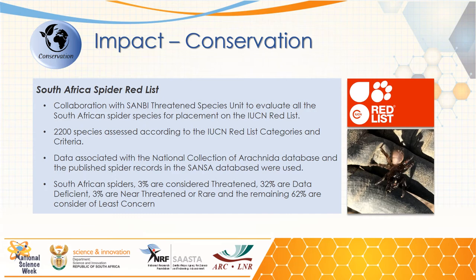The South African Red List project was done in collaboration with the South African National Biodiversity Institute. Over two thousand species of spiders were evaluated for placement on the IUCN Red List. The data associated with these specimens in the national collection of arachnids was used to do these assessments. It was found that three percent of South African spiders are considered threatened, three percent are near threatened or rare, and a large proportion — 62 percent — are considered of least concern, meaning they are not at risk of species loss.